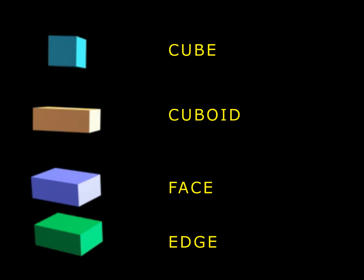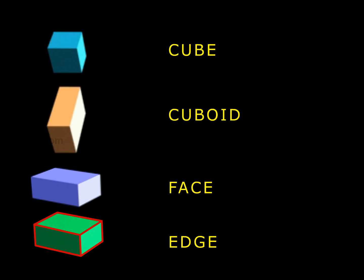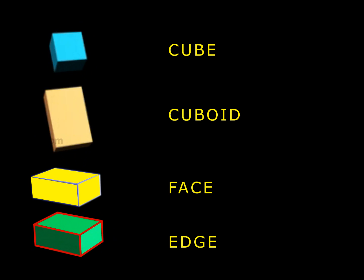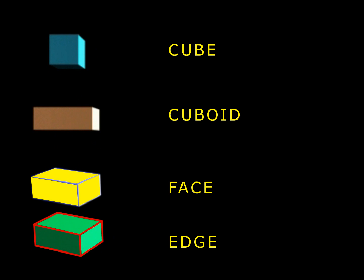Now, let us first recapitulate the terms cube, cuboid, face, and edge. A cube is a solid with six square surfaces. A cuboid is a solid with six rectangular surfaces. Each smooth surface is called a face. The lines where the faces meet are the edges.